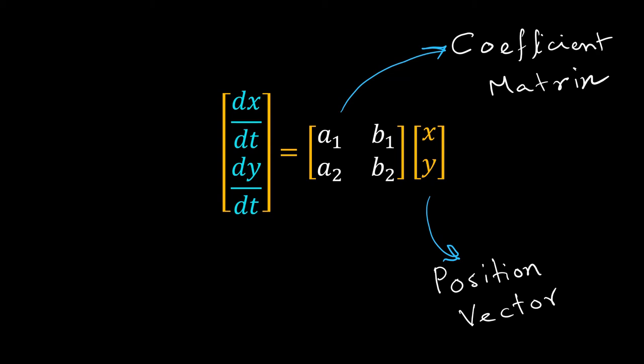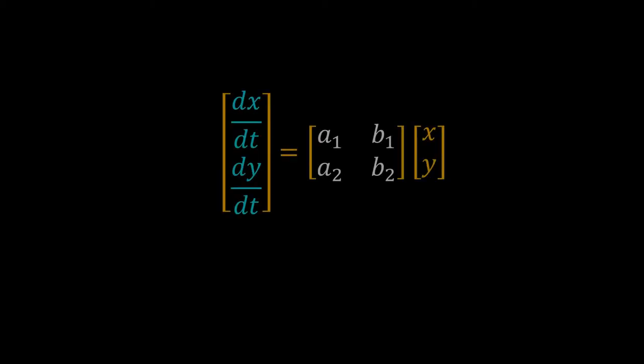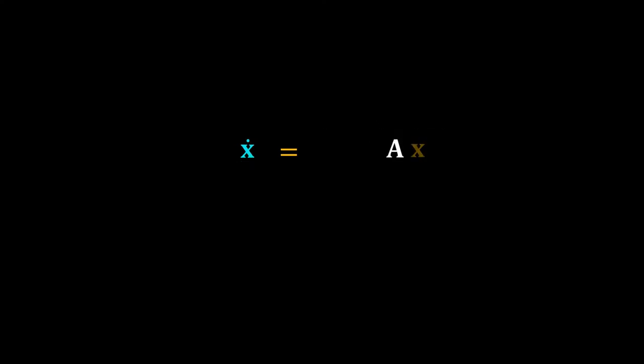Near the end of this video, we will discuss position vectors in detail. Usually, we write this in a short form: x̂˙ = Ax. Both x̂˙ and x are written in bold because both are vectors. Sometimes we may put a small arrow or a hat over the symbol to represent a vector. A is a matrix and is also written in bold.